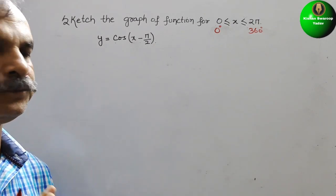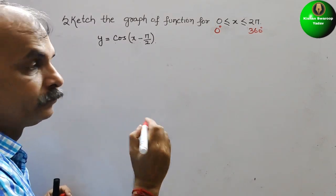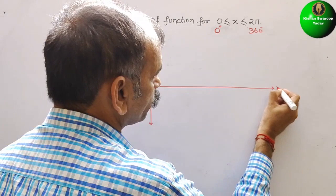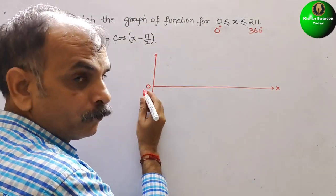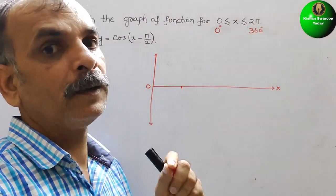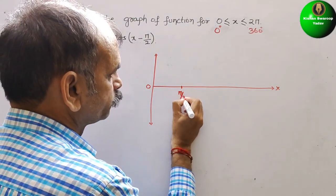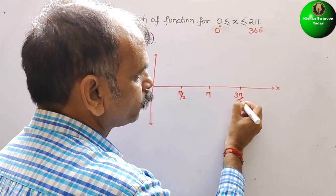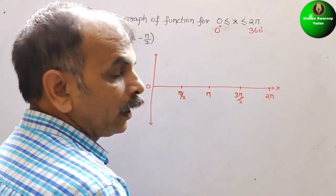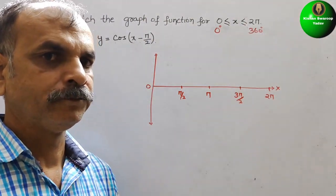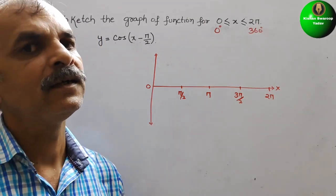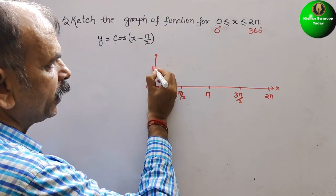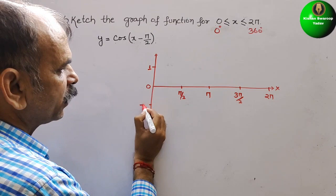First we will understand cos x, so we will make the cos x graph. This is your y-axis and this is your x-axis. We mark 0 degrees, then π/2 which is 90 degrees, then π which is 180 degrees, then 3π/2 which is 270 degrees, and then 2π. In the y-coordinate we make the amplitude of the cos wave — cos normally moves from 1 to minus 1, so here it is 1 and here it is minus 1.